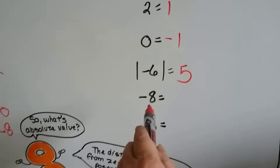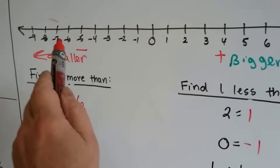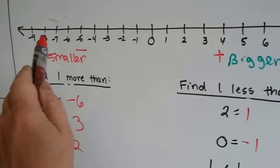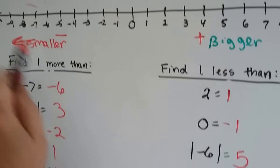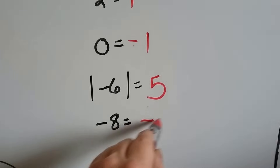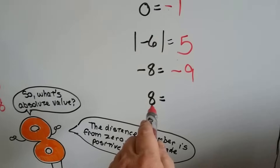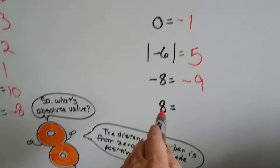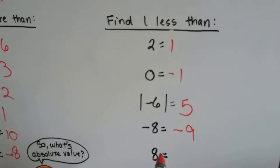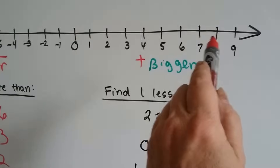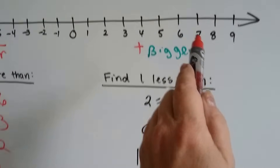What's one less than negative eight? It doesn't have absolute value on it, so we're actually at negative eight. What's one less? We go smaller — we go to negative nine. What's one less than eight? Here's eight. If we want to go less, we go to the left, so it's seven.